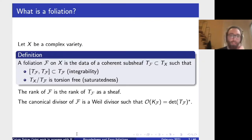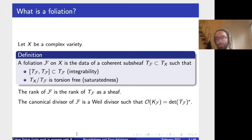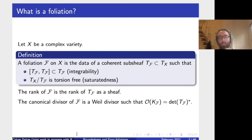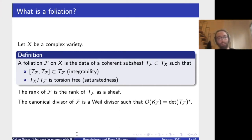So first off, what is a foliation? Let X be a complex variety. A foliation is just the data of a coherent subsheaf TF which satisfies two properties. The first one is integrability — the foliation is closed under Lie bracket. The second condition is that TX mod TF is torsion free, so it's a saturated subsheaf. The rank of the foliation is just its rank as a sheaf. In complete analogy with the case of varieties, we can define a canonical divisor of the foliation KF, where O(KF) is the determinant of the tangent sheaf of the foliation.